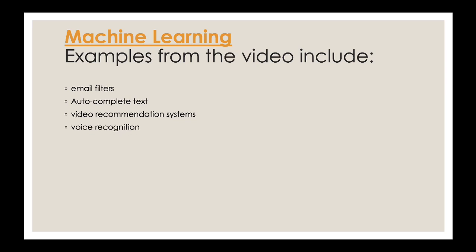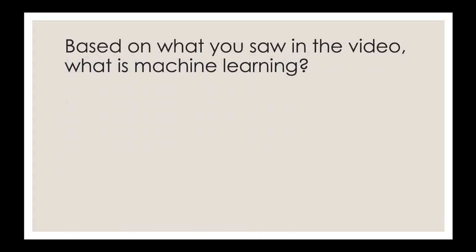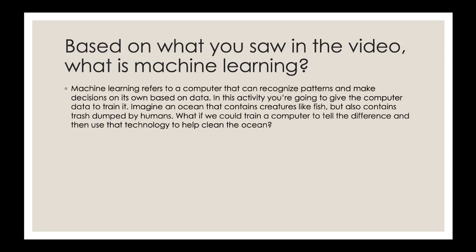Voice recognition — for example, when you talk to Siri, translation apps, and digital assistants. Image recognition — there are a lot of things like this. Today we are going to learn how you give data to a machine so it can learn from you, and later the machine will do these things on its own. Machine learning refers to a computer that can recognize patterns and make decisions based on data. In this activity, you are going to give the computer data to train it.